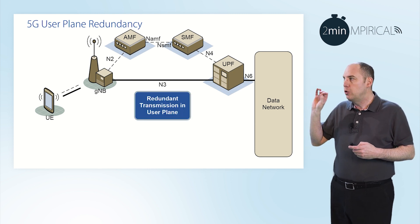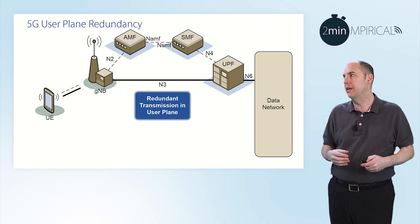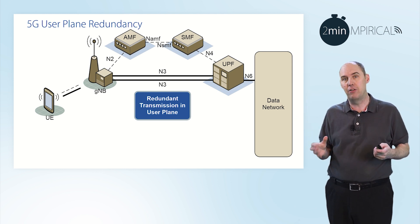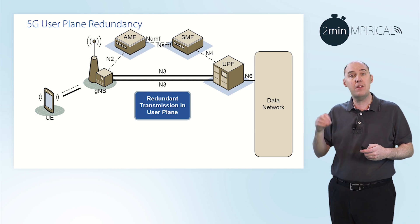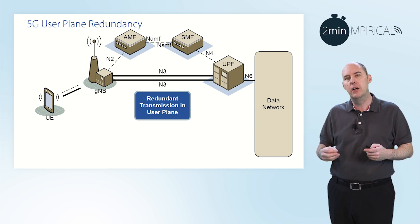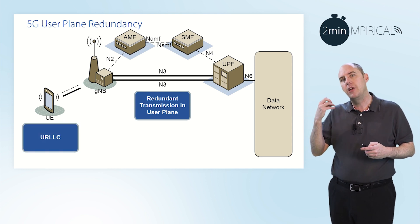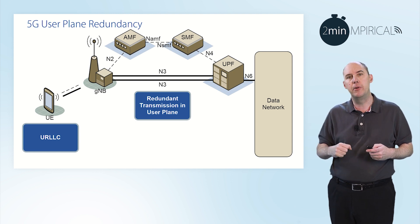Now we're talking about having redundant transmissions in the user plane. What does that actually mean? There are lots of different implementations of this. The easiest one to start with is simply looking at the N3 — notice now we have two N3 connections, so we have effectively some redundancy there. As soon as you start talking about redundancy or duplication and diversity, you'll typically be thinking about the URLLC feature — ultra-reliable and low latency communications.